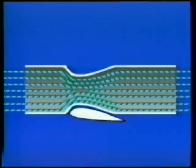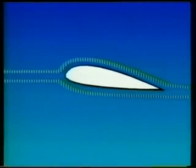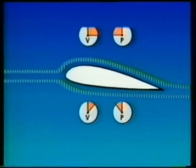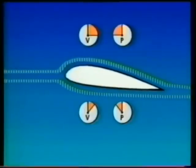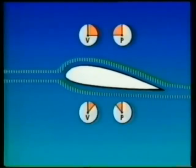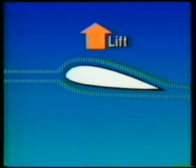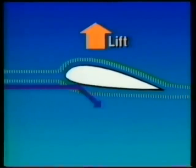If you were to replace the constriction with an airfoil such as a wing, the same principle would still apply. As oncoming air meets at the leading edge of the airfoil, it separates, with part of the airflow going over the top and part going below. Since the air flowing over the top has farther to go, it must travel faster. The result is lower air pressure above the wing. Because higher pressure tends to flow toward areas of lower pressure, the airfoil or wing is lifted. This accounts for about 75 percent of lift.